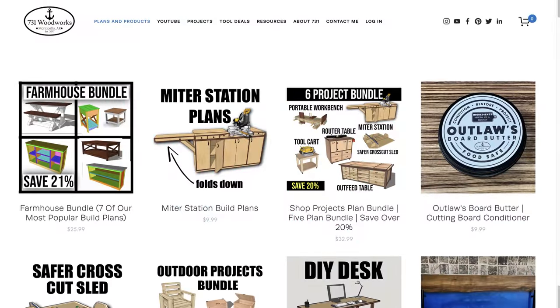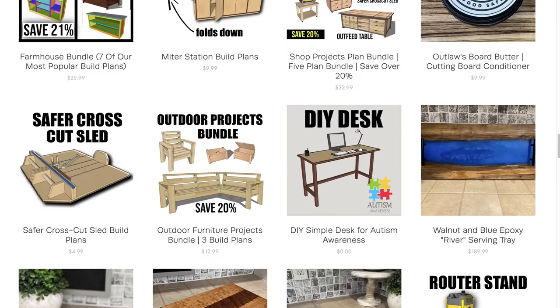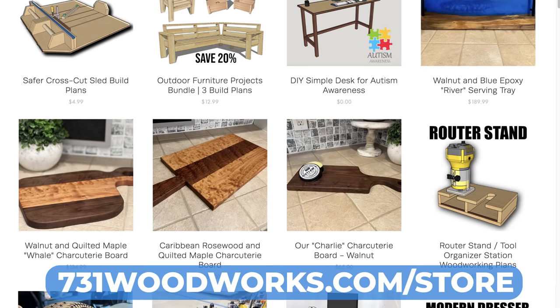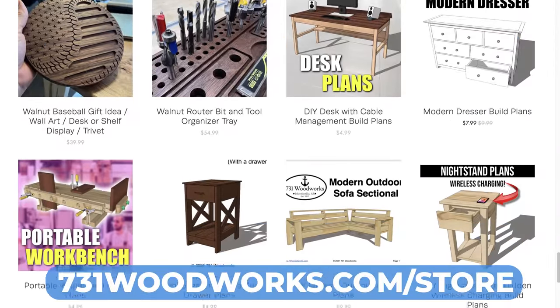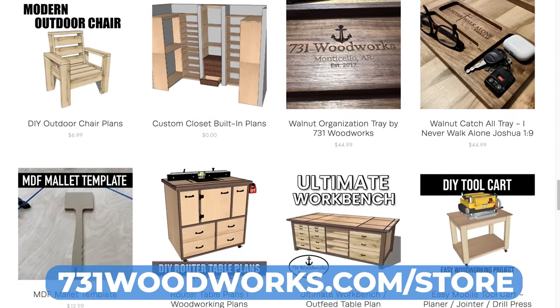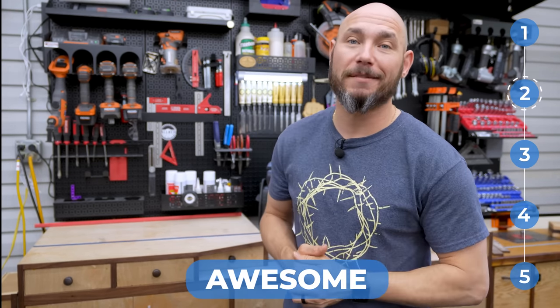Before I tell you about the number three tool that's under $30, let me tell you about our build plans, which are also under $30. If you go check out our online store, 731woodworks.com/store, you'll see that we have various different build plans available to help you make awesome projects. We've also bundled some of those plans together to help you save even more. At checkout, if you use the code AWESOME, I'll give you 20% more off anything you buy. Go check it out.